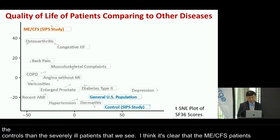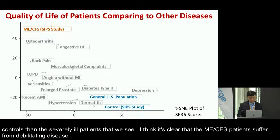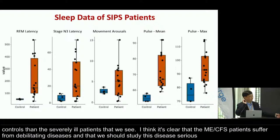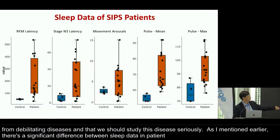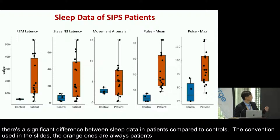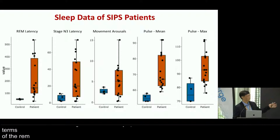It's clear that ME-CFS patients suffer from debilitating diseases and we should study this disease seriously. There is significant difference between sleep data in patients compared to controls — the orange ones are always patients, the blue ones are the controls. In terms of REM latency, stage three sleep latency, movement arousals, and pulse, there is significant difference between patients and controls.